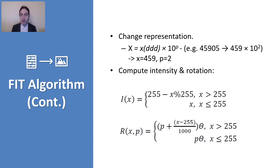So for example, we have 45905. It's represented as 459 multiplied by 10 to the power 2, which means small x is 459 and p is 2. So small x and p are what we need to calculate everything in the micro image that we have for every feature.